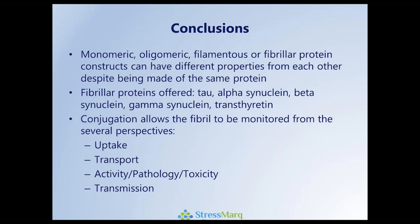In conclusion, we have monomeric, oligomeric, and filamentous, as well as fibril protein constructs with many different properties — despite being the fact that they're all made from the same protein. We offer a variety of proteins, including in addition to tau and alpha-synuclein, the beta and gamma-synucleins, transthyretin, and SOD. Conjugation allows the fibril to be monitored from several perspectives, including uptake, transport, activity, pathology, toxicity, as well as transmission.